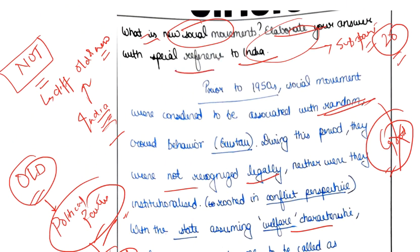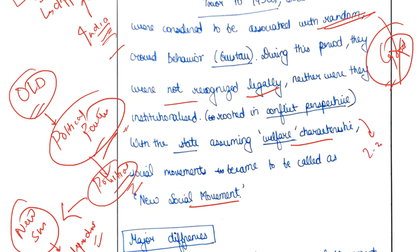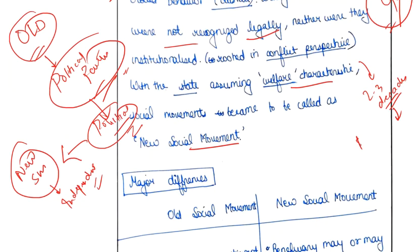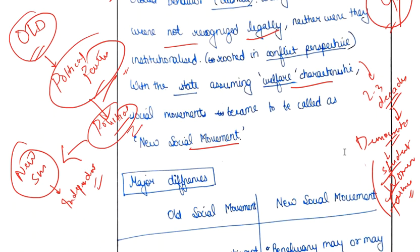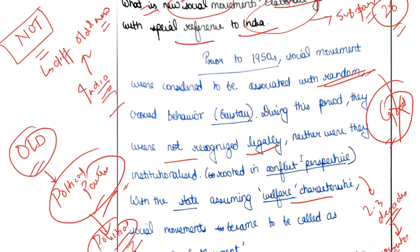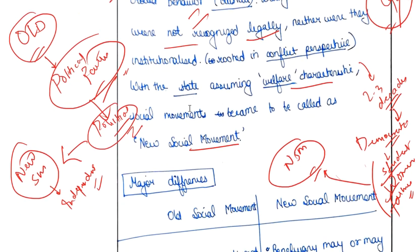Now you have to give your answer with special reference to India. After two or three decades of independence, there was a similar disillusionment with democratic politics. Sections like students, women, and farmers tended to realize that channelizing their demands through conventional democratic politics and political parties was not serving their purpose. That is why they started a new version of social movement — the new social movement in the Indian context. Please do mention their disassociation with political parties in the introduction part itself.